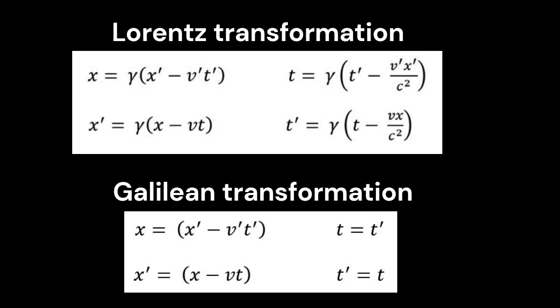Now, here's the Lorentz transformation equations next to the Galilean transformation. A lot of similarities, but a lot of differences too. Look at the x equations. Galilean x equals x prime minus v prime t prime. Lorentz transformation, exactly the same, except there's a gamma out front. x equals gamma times x prime minus v prime t prime.